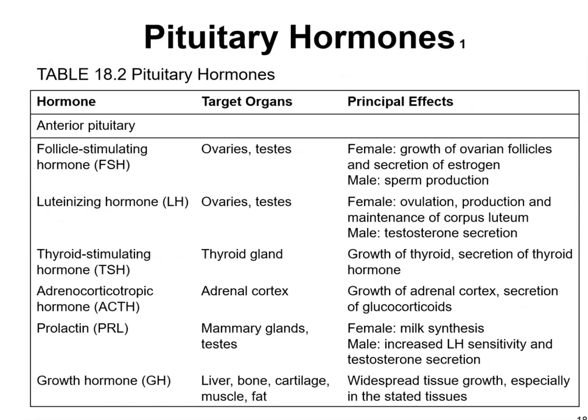Pituitary hormones found in the anterior pituitary include follicle-stimulating hormone, which targets ovaries and testes — promoting ovarian follicle growth and estrogen secretion in females, and sperm production in males. Luteinizing hormone targets ovaries and testes, driving ovulation and corpus luteum maintenance. Thyroid-stimulating hormone promotes thyroid growth and hormone secretion. Adrenal corticotropin hormone (ACTH) stimulates the adrenal cortex. Prolactin drives milk synthesis and, in males, testosterone production. Growth hormone targets liver, bone, cartilage, muscles, and fat for widespread tissue growth.